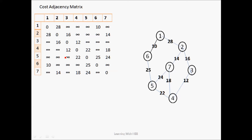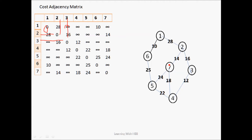First of all we will construct a cost adjacency matrix as shown. It is constructed such that the path from a particular vertex to itself is 0 — for example, (1,1) is 0, (2,2) is 0, (3,3) is 0, and so on up to 7. If there is no edge between two vertices, we put infinity — for example, between vertices 6 and 7 there is no edge so we put infinity, and similarly for other such cases.